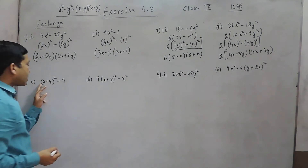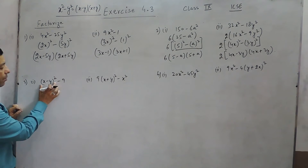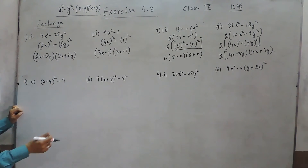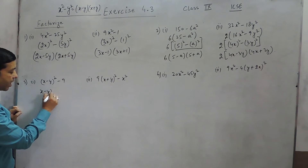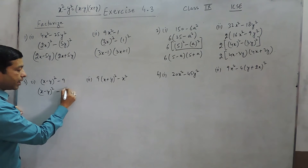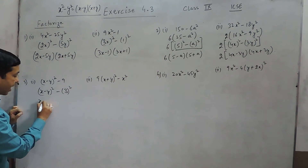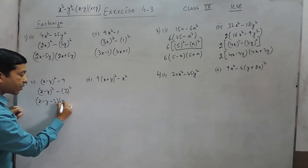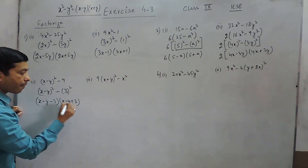When we have x minus y whole square, this can be considered as one term which is a perfect square. So it is x minus y whole square minus 3 whole square, which can be written as x minus y minus 3 in one bracket and x minus y plus 3 in another bracket.